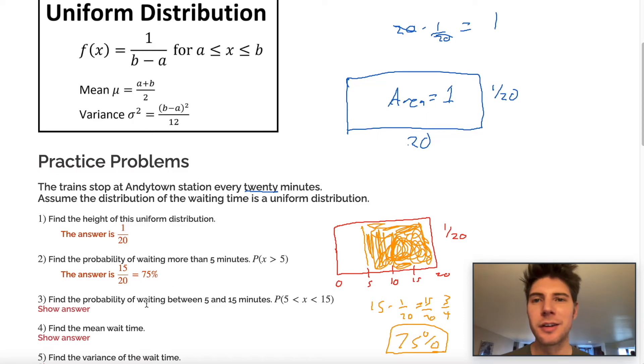Both 15 over 20 or 75%. So number three, we can sketch another rectangle for it. And we have the same thing, the zero, the five, the 10, the 15, and the 20.